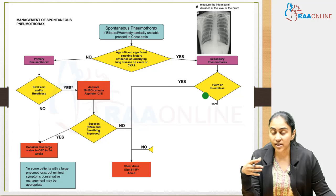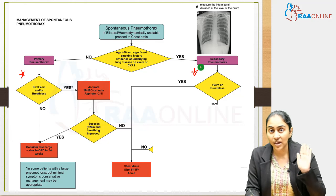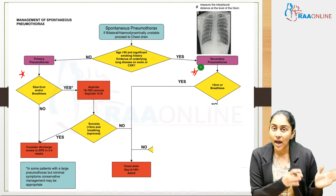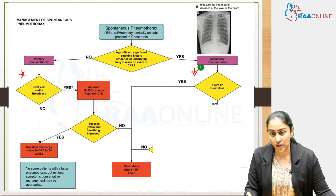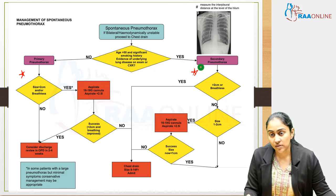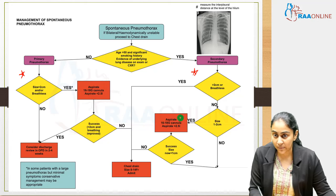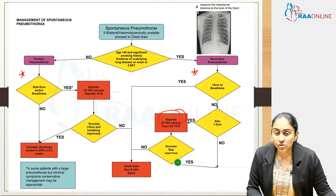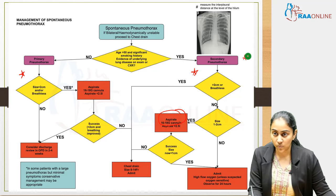Key distinction: in primary spontaneous pneumothorax, the first intervention for large or symptomatic pneumothorax is aspiration, with ICD only if aspiration fails. In secondary spontaneous pneumothorax, the very first intervention is ICD. For secondary pneumothorax with size less than one centimetre and asymptomatic: admit, give oxygen, and observe. Size between one and two centimetres: aspirate; if unsuccessful, ICD. All other cases in secondary pneumothorax are admitted on high-flow oxygen and observed.